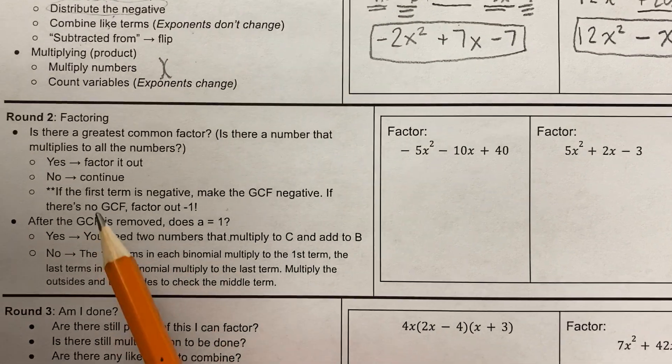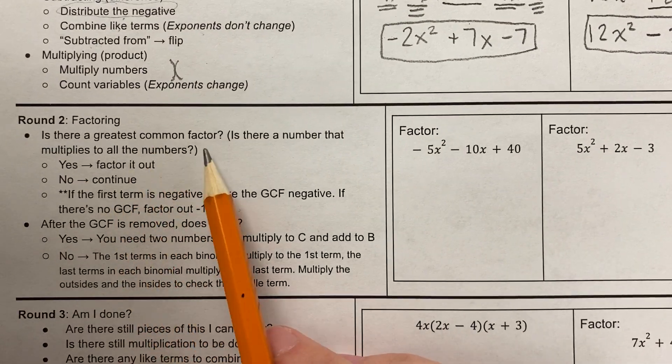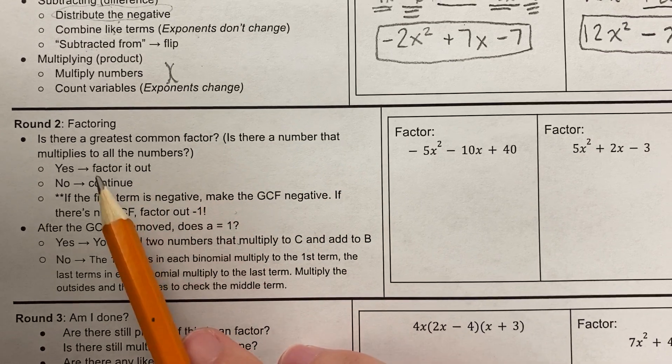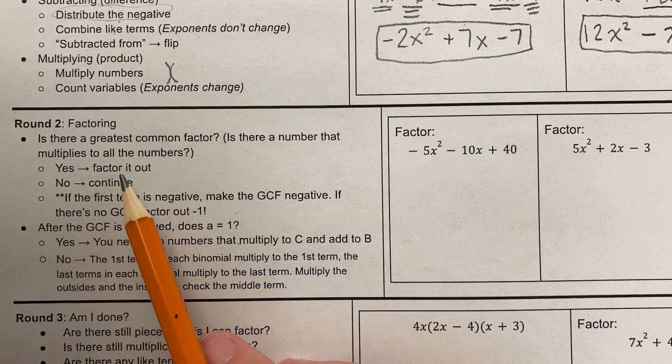Round two is all about factoring. The first question you're going to ask yourself is, is there a greatest common factor? Is there a number that multiplies to all the numbers? If yes, you factor it out. If no, continue on your way.